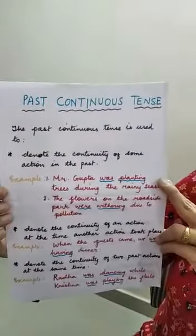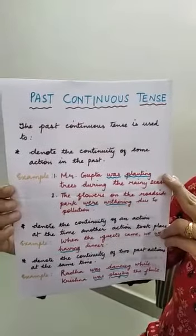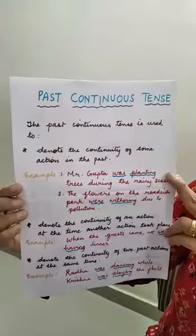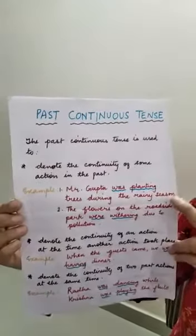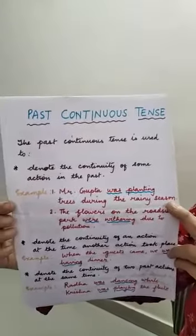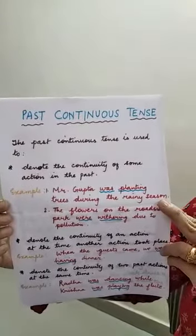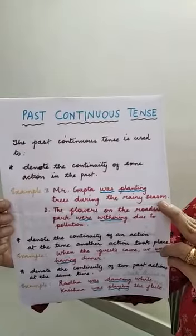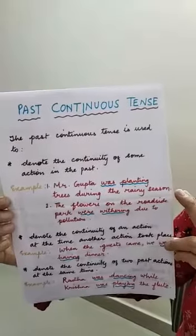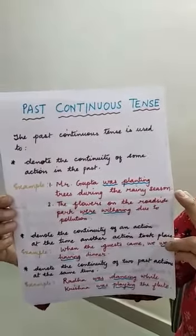The past continuous tense is used to denote the continuity of some action in the past. For example, Mr. Gupta was planting trees during the rainy season. Another example is: the flowers on the roadside park were withering due to pollution.